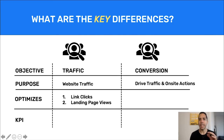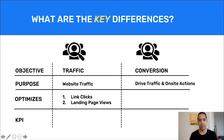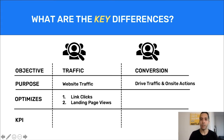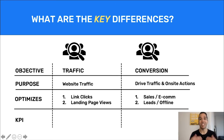A traffic campaign can optimize for link clicks — someone likely to click on your ad. It can also optimize ad delivery for landing page views, someone who's going to click on your ad and land on your page. But a conversion campaign takes it a step further, optimizing for someone to actually take an action once they're on your website.